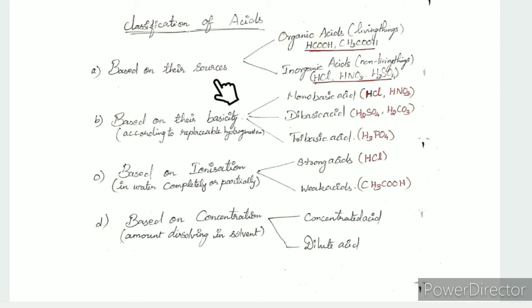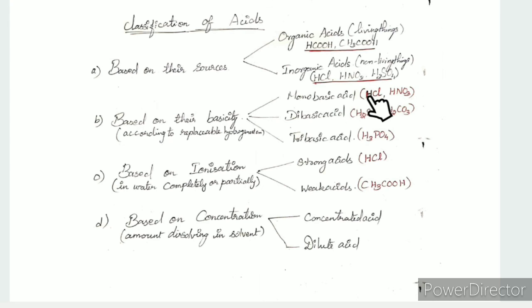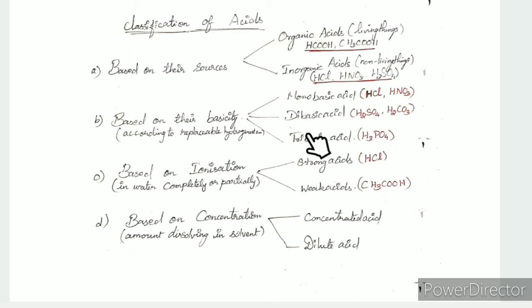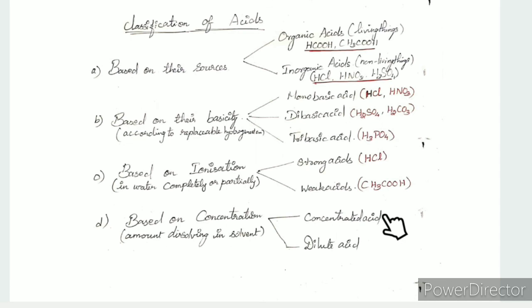To recap: source classifies acids as organic (from living things) or mineral (from non-living things). For basicity: one replaceable hydrogen atom is monobasic, two is dibasic, and three is tribasic. For ionization: strong acid is completely ionized, weak acid is partially ionized. For concentration: concentrated acid has a large amount of acid, dilute acid has a smaller amount.